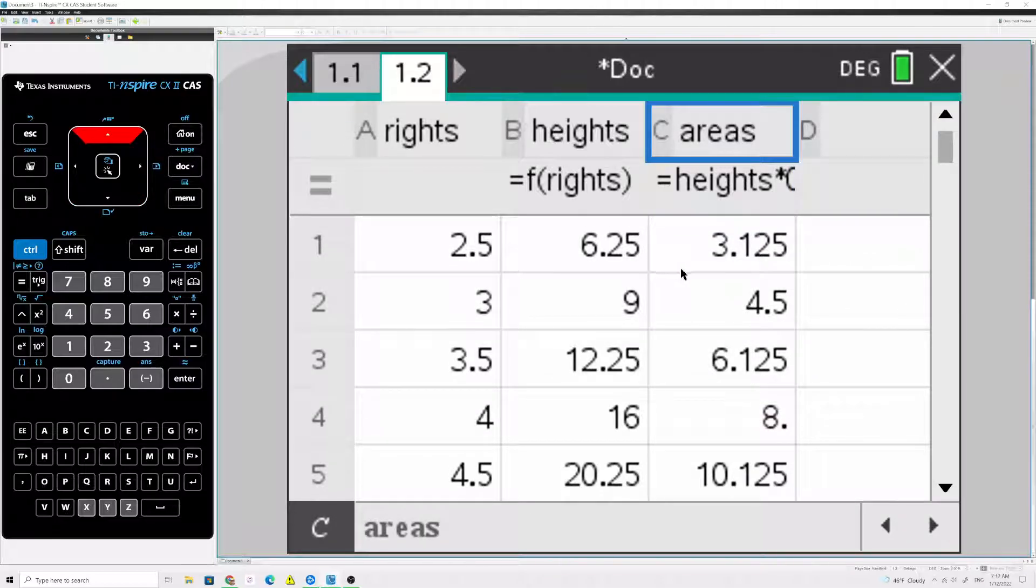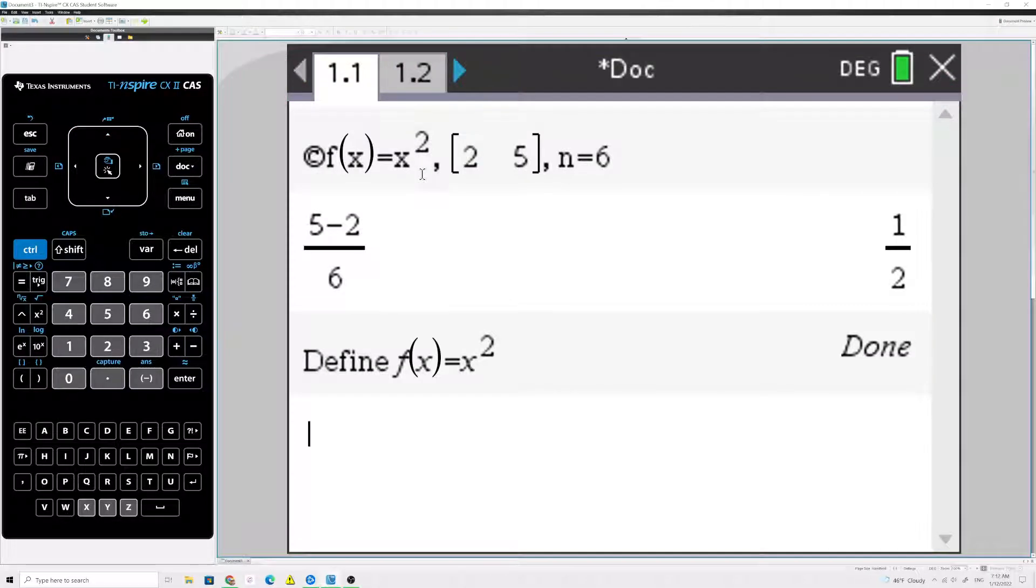So, if I want the Riemann sum, I just need to add all of these numbers up. It's actually faster to type the word sum. The sum command is buried in a menu. It's more than three key presses. So, just type the word sum at the bottom, and I want to sum the column that I called areas. So, the area of all those rectangles put together is 44.375.